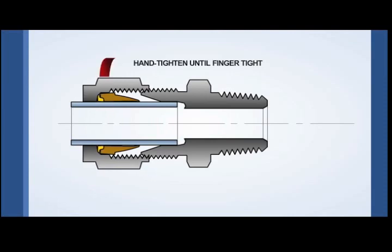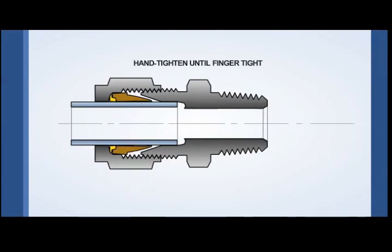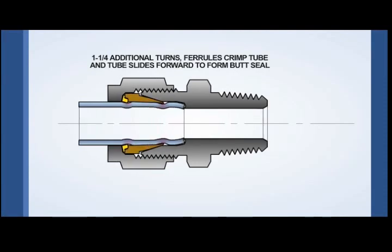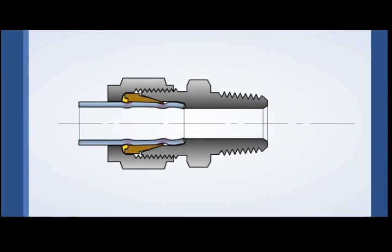The nut is then hand-tightened until finger-tight. Next, using a wrench, apply torque and tighten the nut one and a quarter additional turns. While this is happening, the ferrules crimp the tube and the butt seal is formed on the end of the tubing.